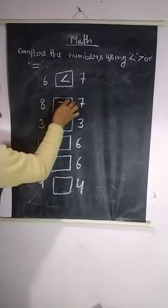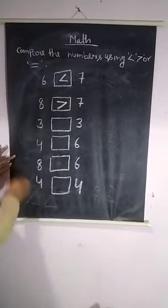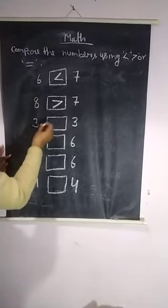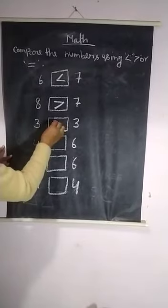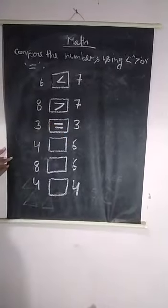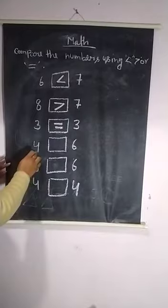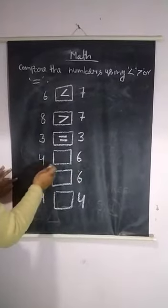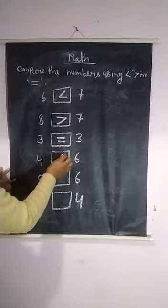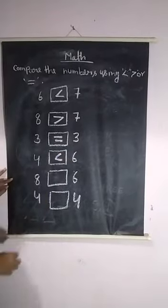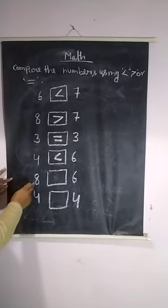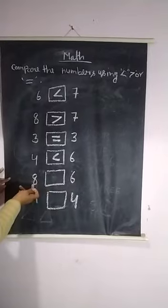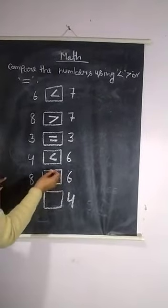3 box 3, 2 box 3 — same, equal to. 4 box 6. 4 box 6 — 6 greater than. 8 box 6 — 8.